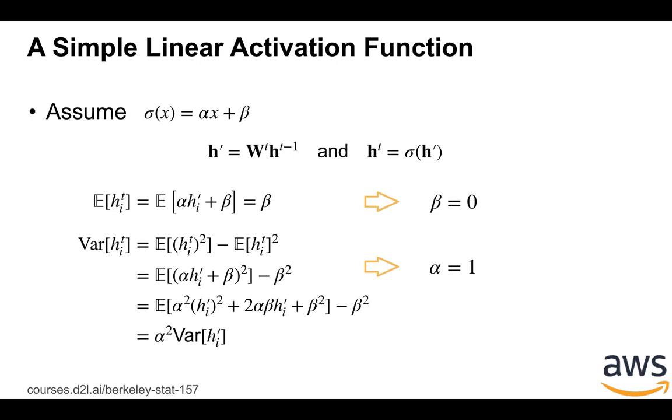Which means for the forward path, if we're going to satisfy the assumptions we have before, then the activation function should be just the identity function.